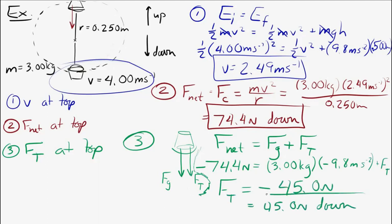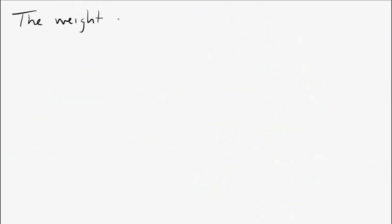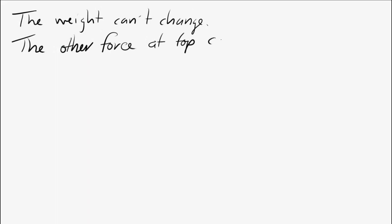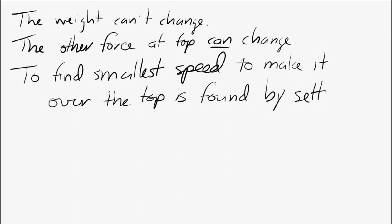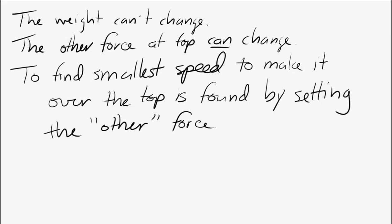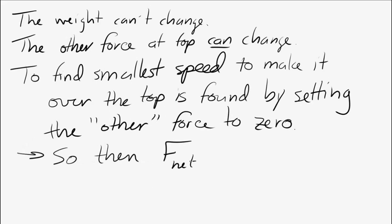One important point: the force that can change at the top of a vertical circle is the force that's not weight — like tension or normal force. To find the minimum speed at the top, set that tension or normal force equal to zero. That means the net force equals only the weight. Keep that in mind when problem solving.